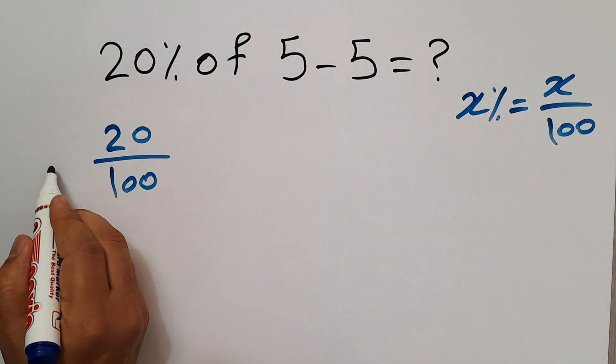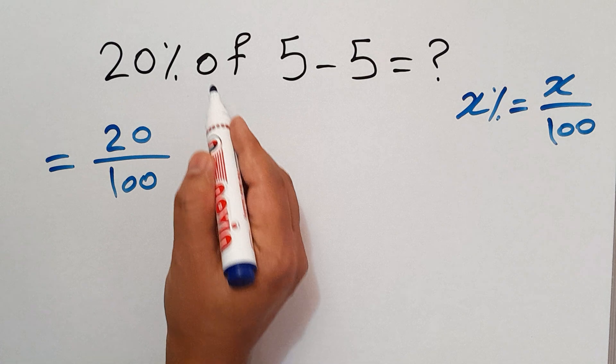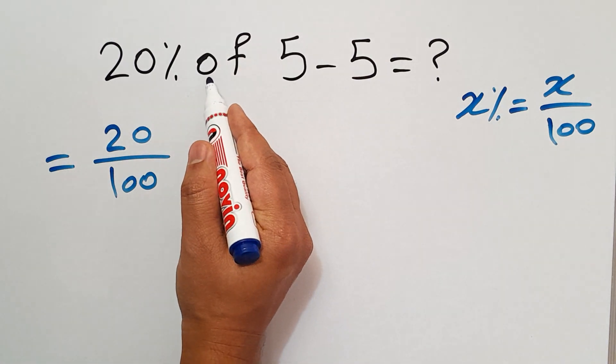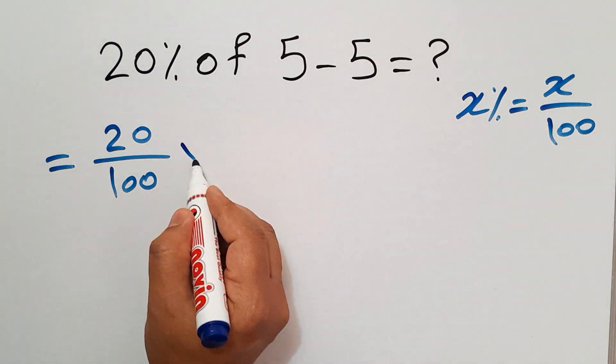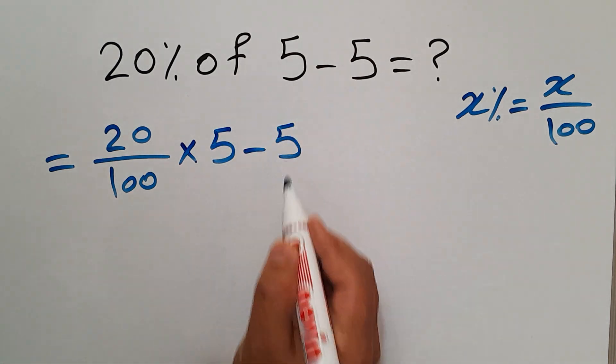So we have 20 over 100, and here we have 'of'. 'Of' means multiply, so times 5 minus 5.